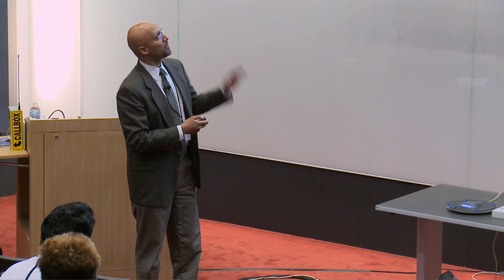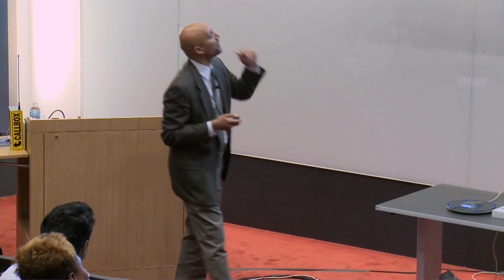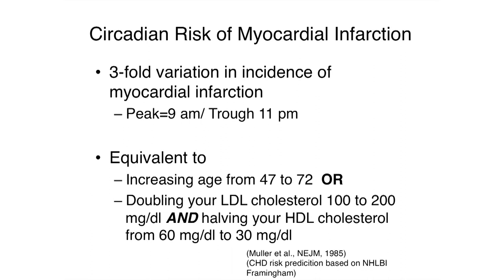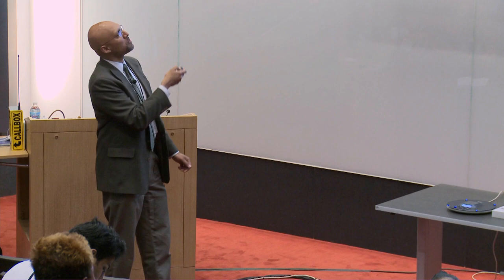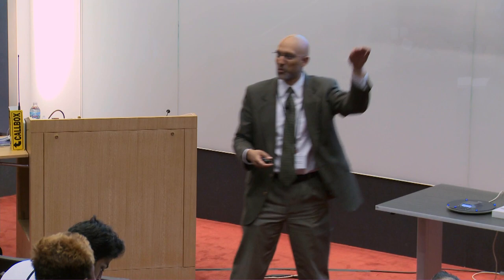Let me give you an example of what I mean by circadian risk of heart attack. It's about a three-fold variation: around nine o'clock in the morning, you have three times higher likelihood of having a heart attack than at 11 at night. To increase your risk of cardiovascular disease by three-fold otherwise, you'd have to increase your age by 25 years, or double your LDL cholesterol and cut your HDL cholesterol in half. So every day, as human beings, we're going through a high-risk time and a low-risk time — and the clock is presumably a major feature of how we're controlling this.